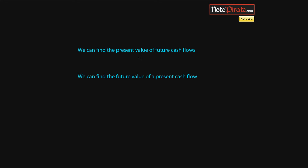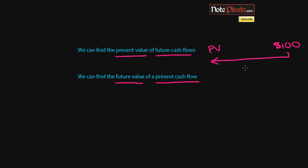We're going to be talking about compound interest, but before that I just wanted to summarize what we talked about last time. Last time we were looking at how we can find the present value of future cash flows, or the future value of a present cash flow. In the first case, we looked at how we can take a hundred dollars as a future cash flow and discount that back — discounting essentially means finding the present value using the rate of return, discount rate, or risk-free rate.